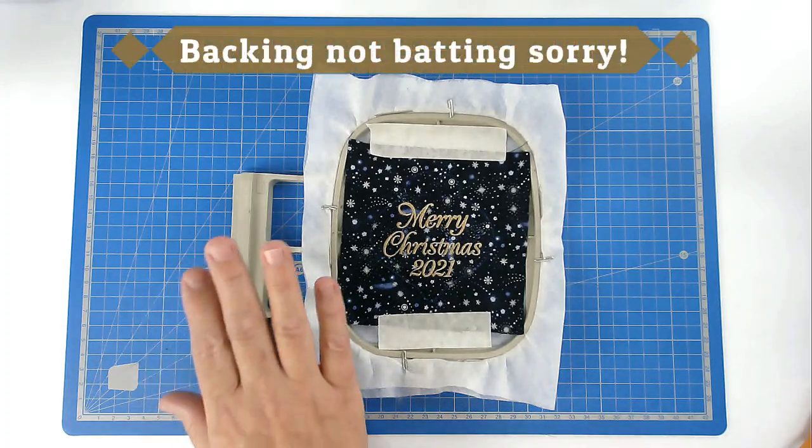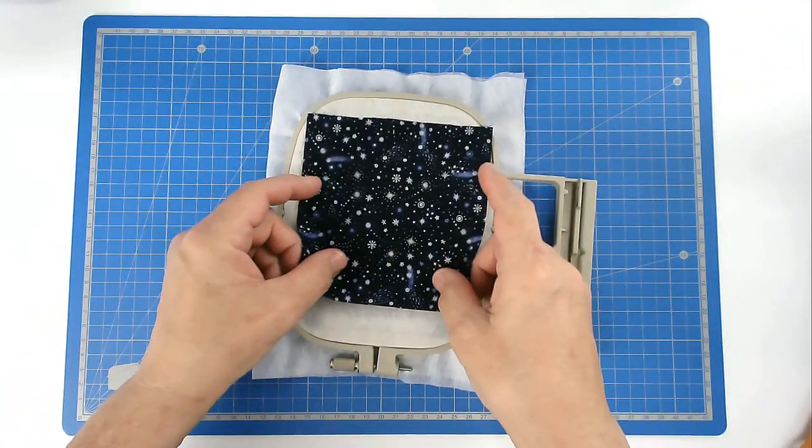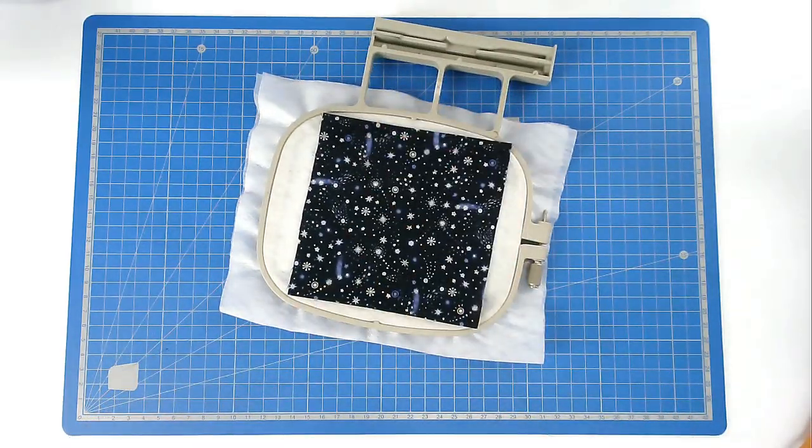You're now going to add your backing, so turn your hoop over and place your fabric over the outline. Then tape it in place.